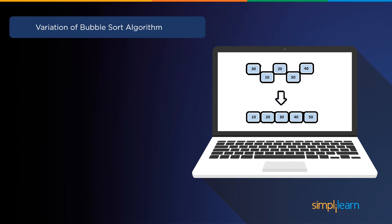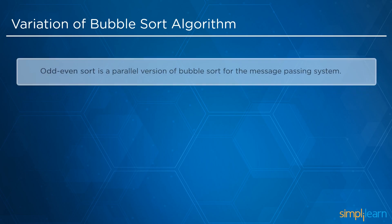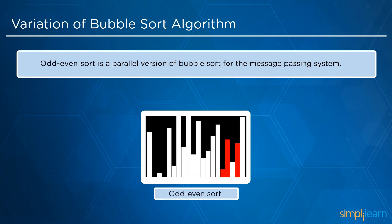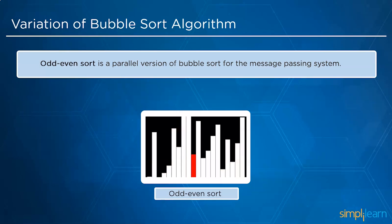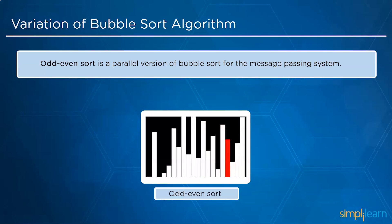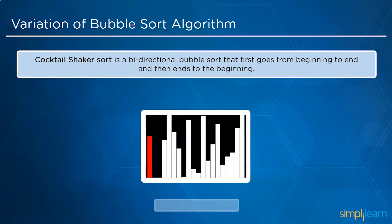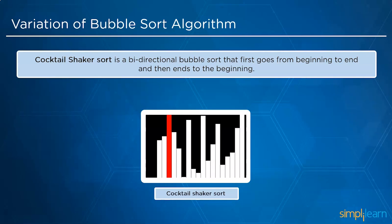There are two variations of the bubble sort algorithm: odd-even sort and cocktail shaker. Odd-even sort is a parallel version of bubble sort for message passing systems. Cocktail shaker is a bi-directional bubble sort that first goes from beginning to end, and then from end to beginning.